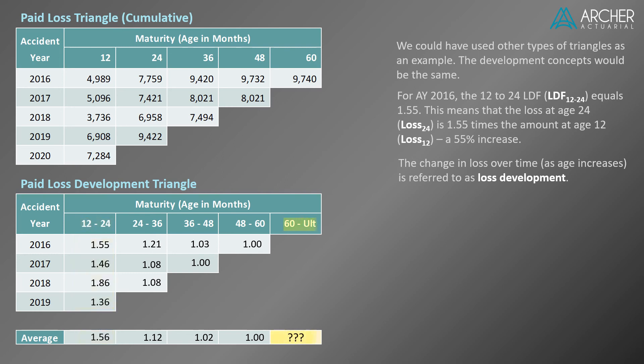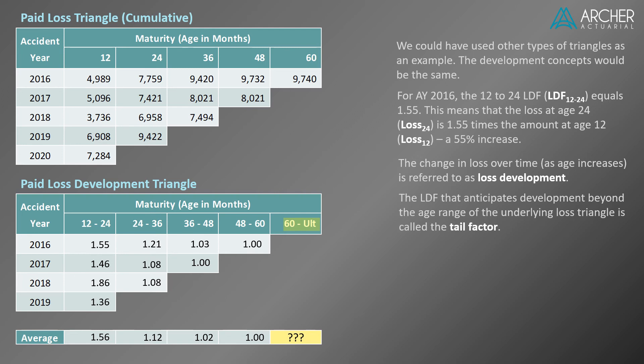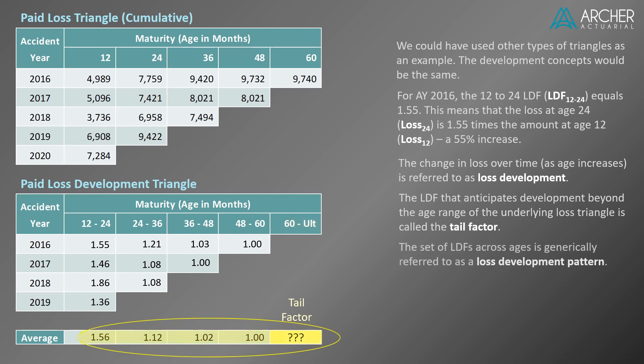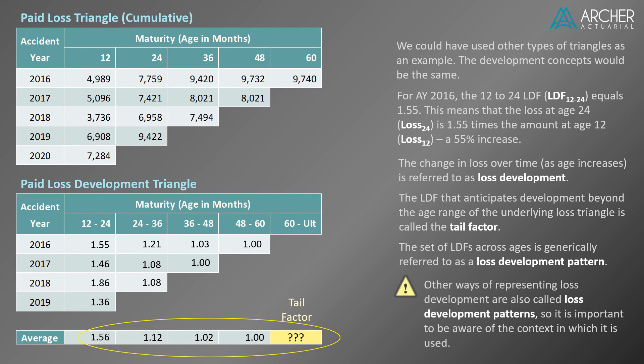What about the average LDF beyond age 60? The LDF that anticipates development beyond the age range of the underlying loss triangle is called the tail factor. Tail factors are a very important part of loss development and will be discussed later in this video series. The set of LDFs across all ages is generically referred to as a loss development pattern. Note that there are other ways of representing loss development that are also called loss development patterns, so it's important to be aware of the context in which this is used.